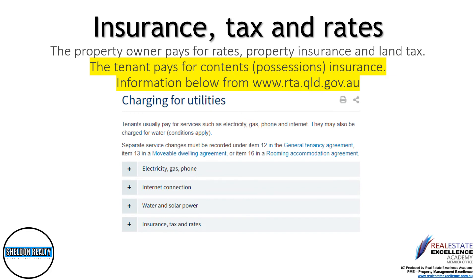During your tenancy agreement, it is your responsibility to pay for your own contents and possessions insurance. Refer to the terms of the agreement in relation to electricity, gas, phone, internet, water, or solar power to be sure you're aware of all your responsibilities and requirements for connections of such services. The property owner pays for rates, property insurance, and land tax. Our agency strongly recommends that you ensure you have contents and possessions insurance.